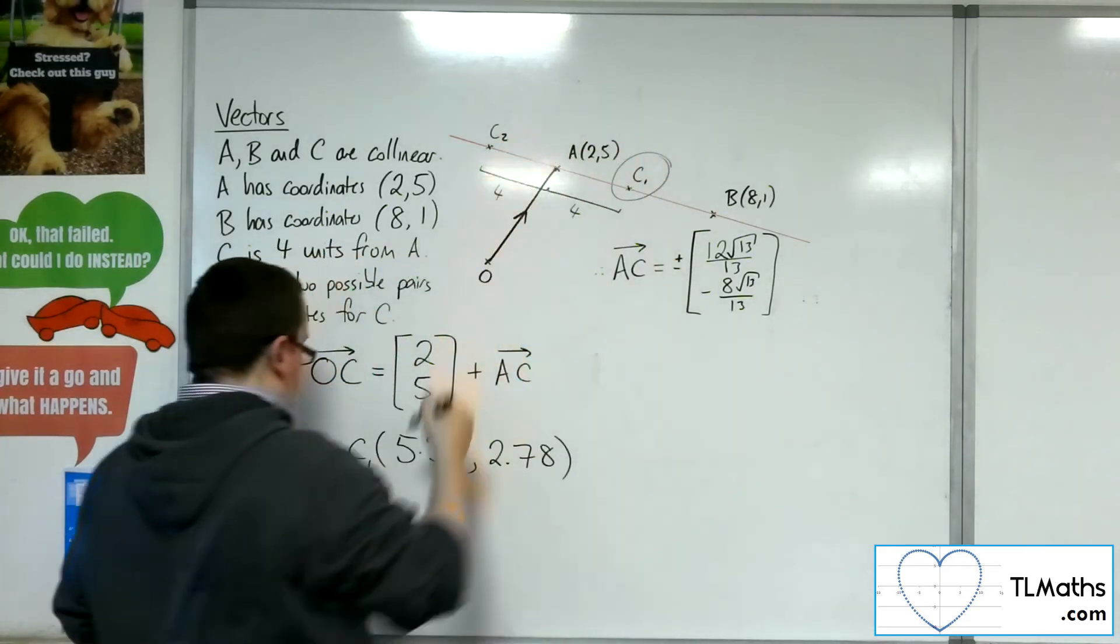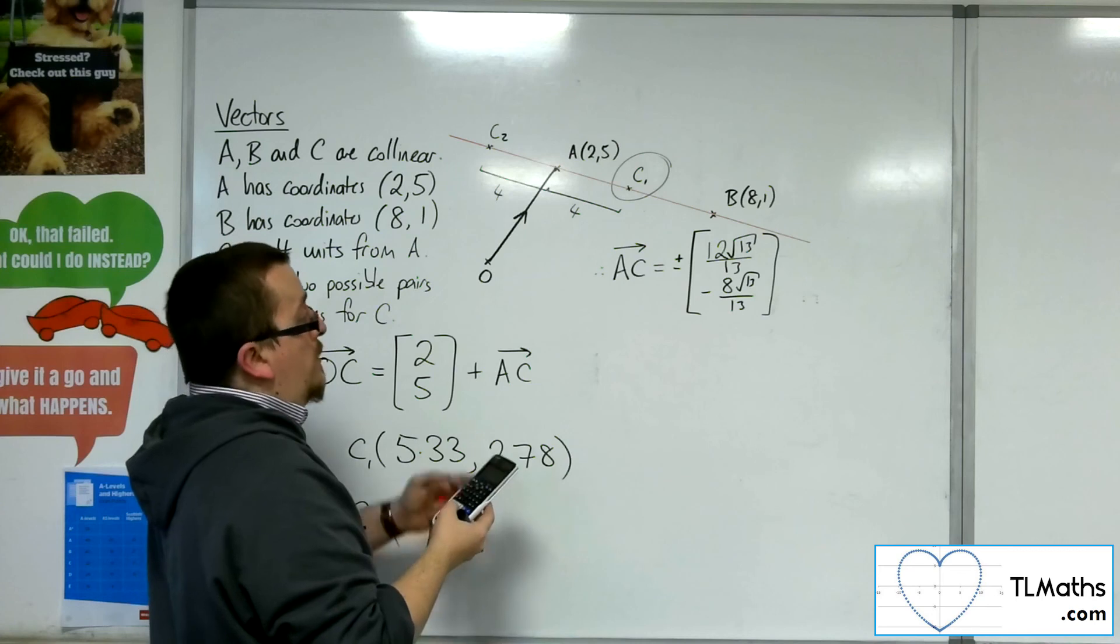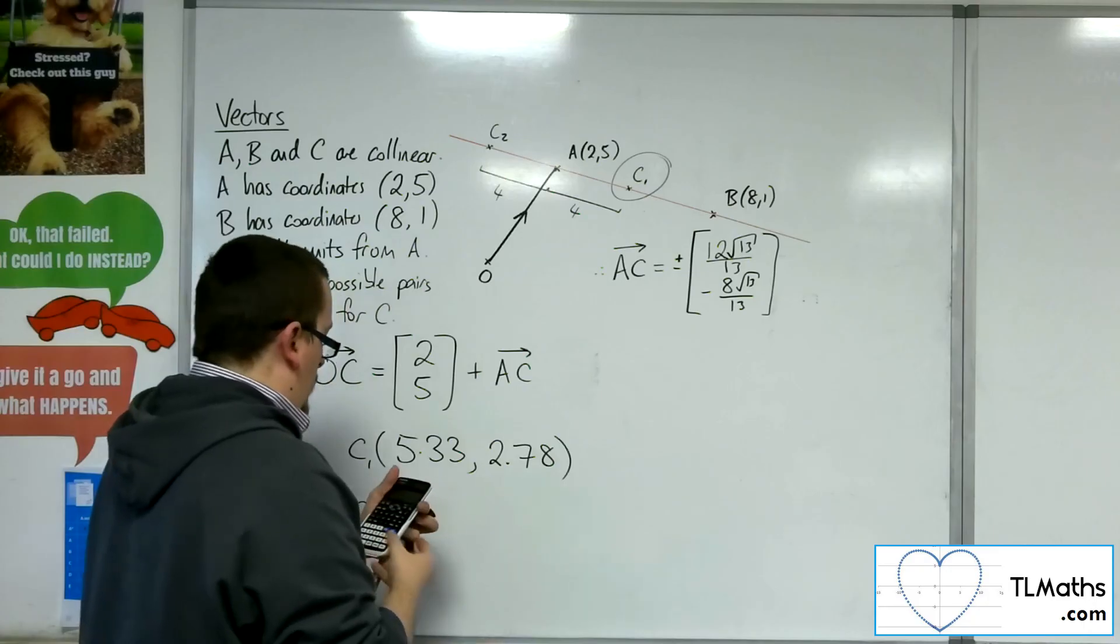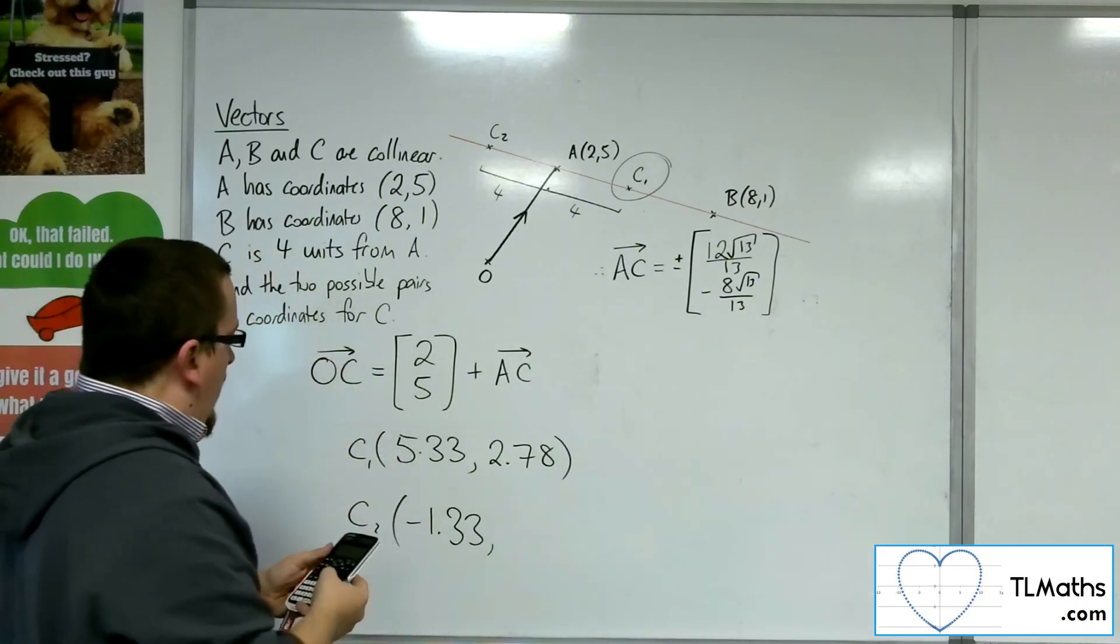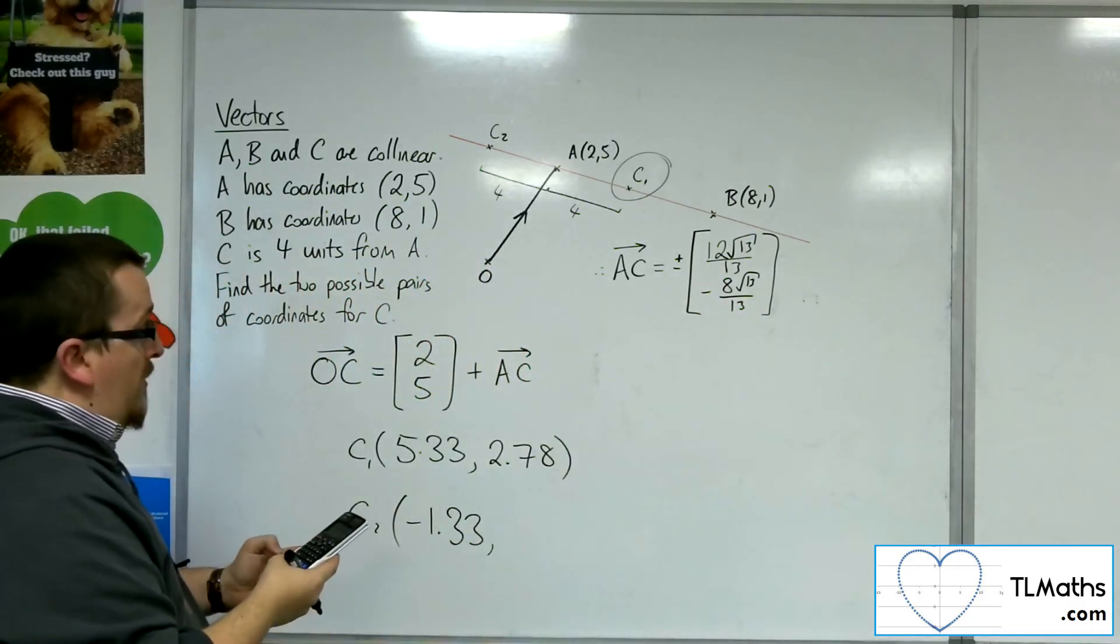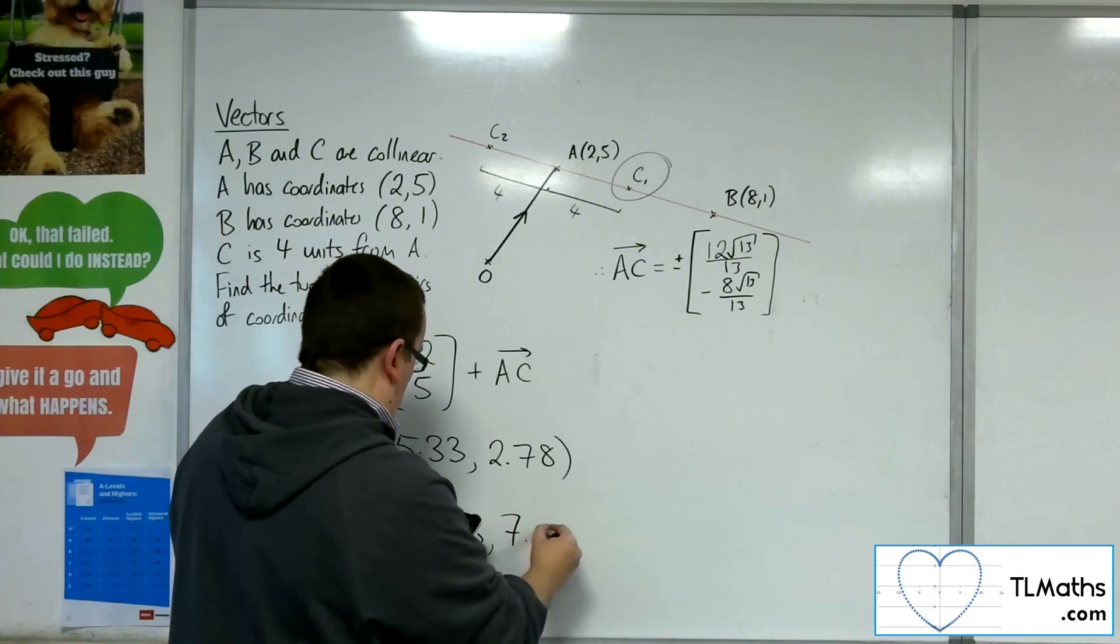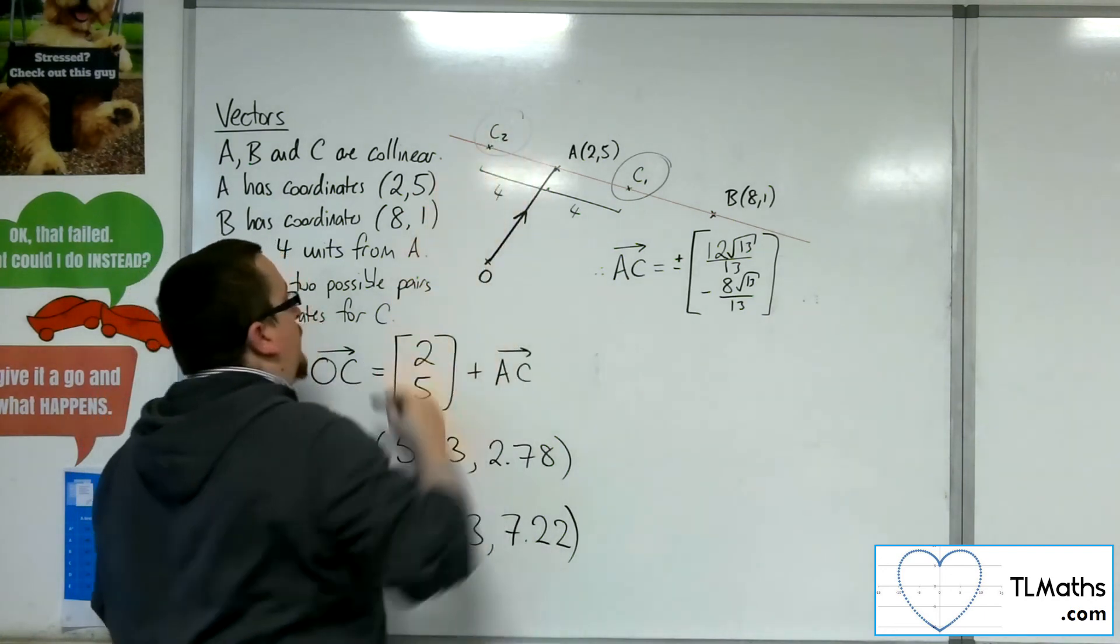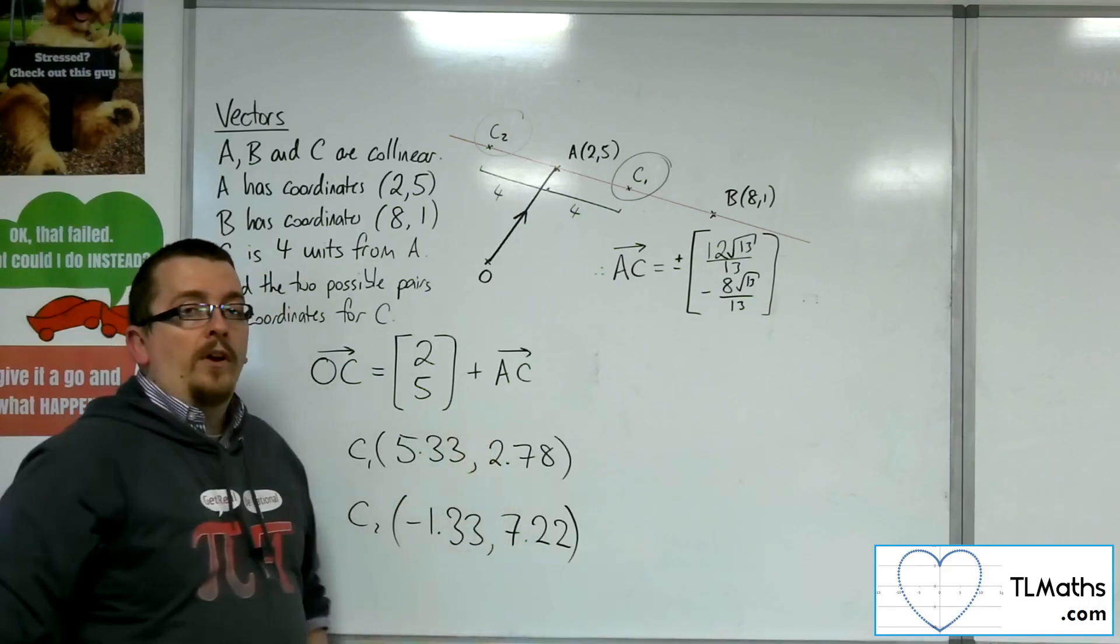So C2 will be 2 take away 12 root 13 over 13. So that's minus 1.33 to 3 sig fig. And I'll have 5 plus 8 root 13 over 13. The two minuses. So 5 plus 8 lots of root 13 over 13. And that gets me 7.22 to 3 sig fig. So they are the two possible coordinates of C, given that these two points are four units away from A.